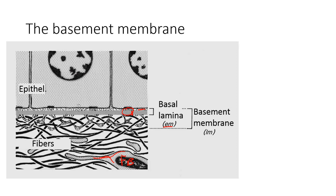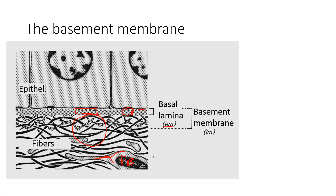So the basal lamina is secreted by the epithelial cells, and it forms the connection to the underlying connective tissue secreted by fibroblasts, which we'll learn more about in the next unit. These connective tissue fibers are sometimes referred to as the reticular lamina — 'reticular' just means an interconnected meshwork, like a network or mesh of stuff. So that's called the reticular lamina.